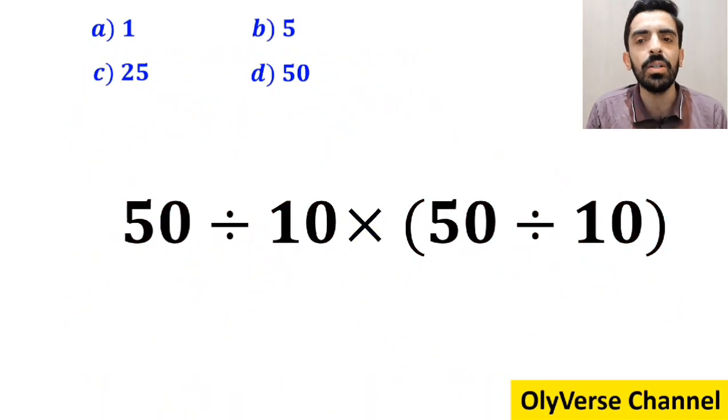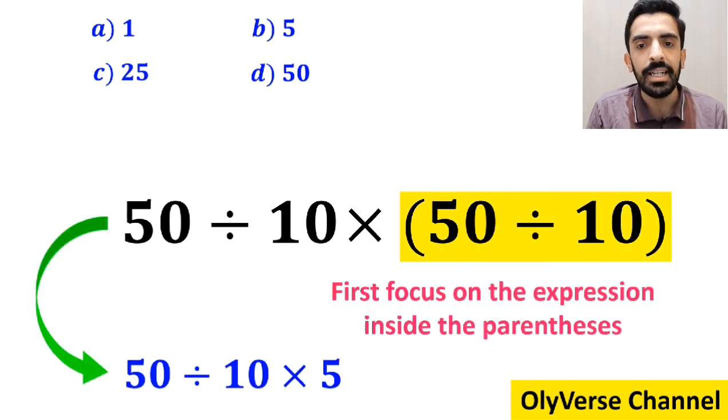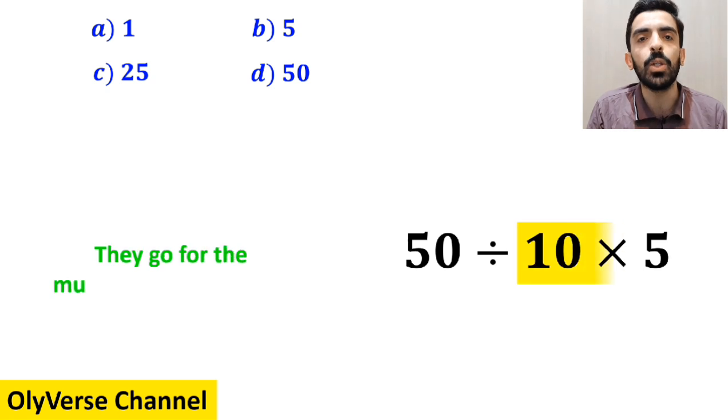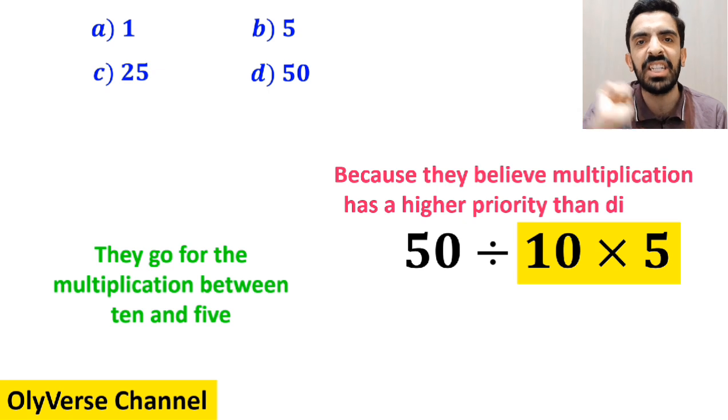Many people, when starting to solve this question, first focus on the expression inside the parenthesis, and instead of considering the whole expression, they write it as 50 divided by 10, then times 5. In the next step, they go for the multiplication between 10 and 5 because they believe multiplication has a higher priority than division.